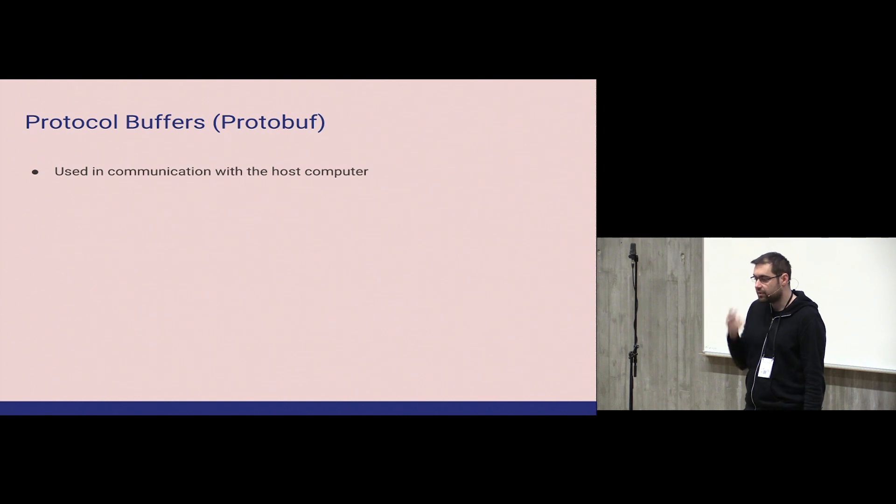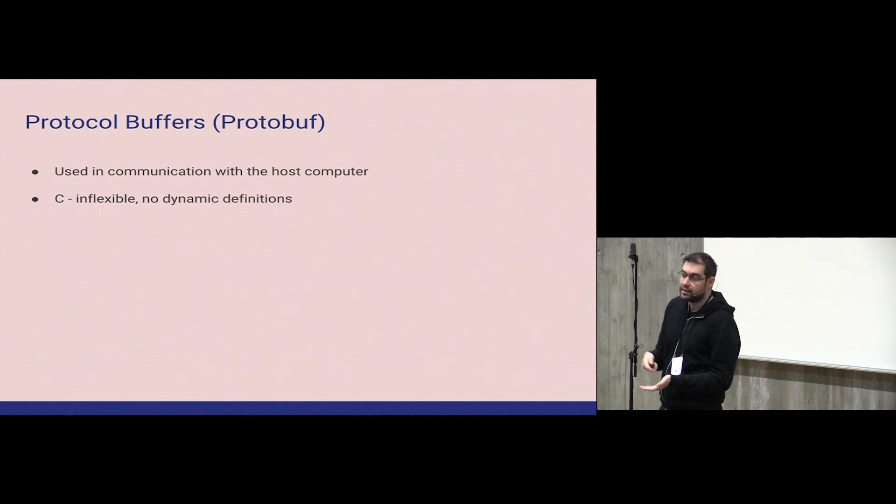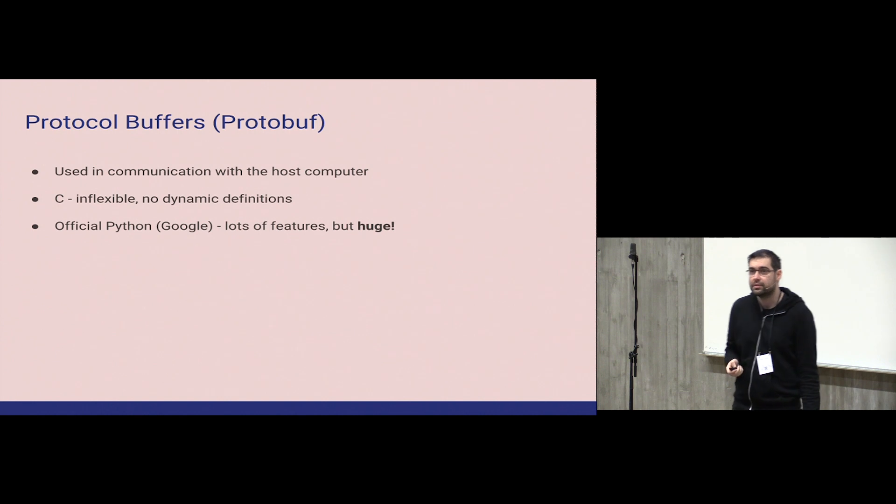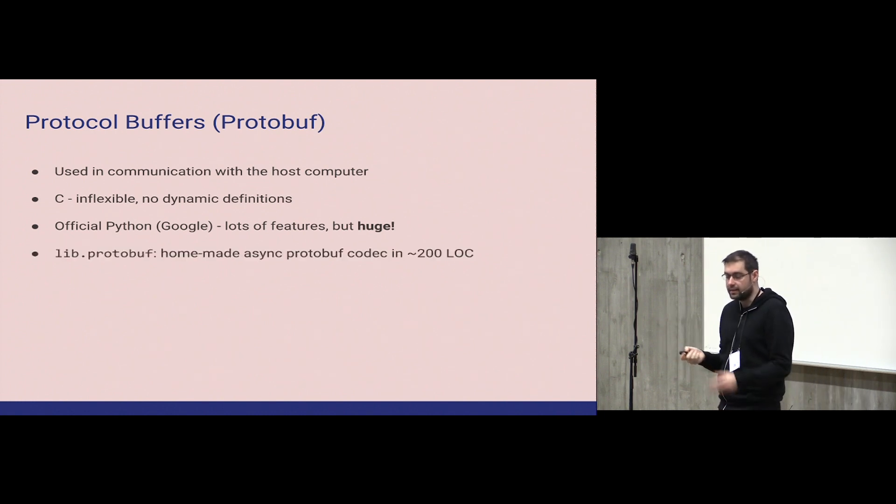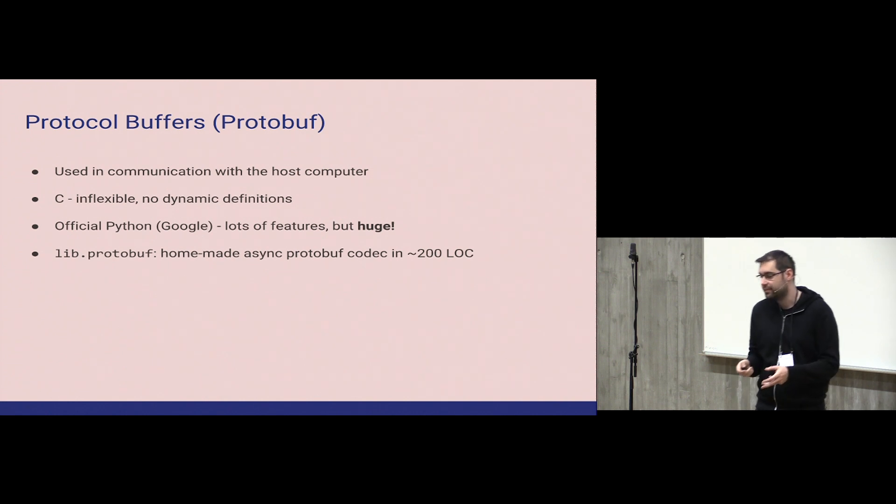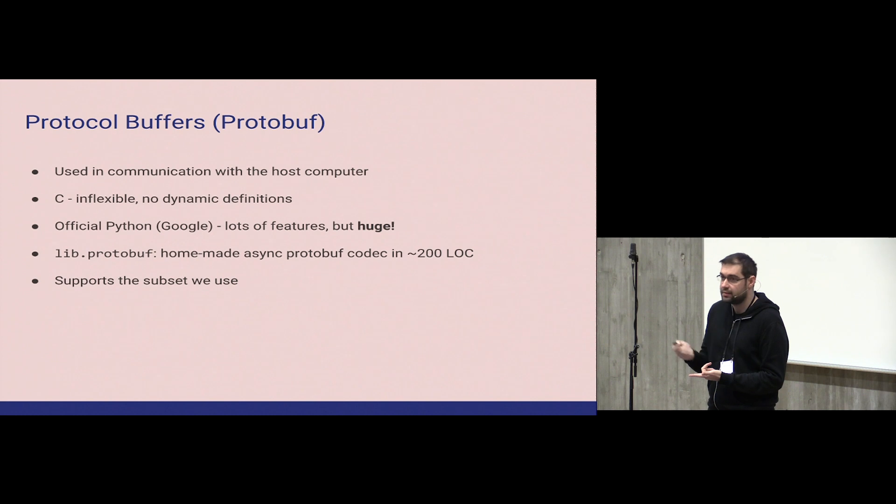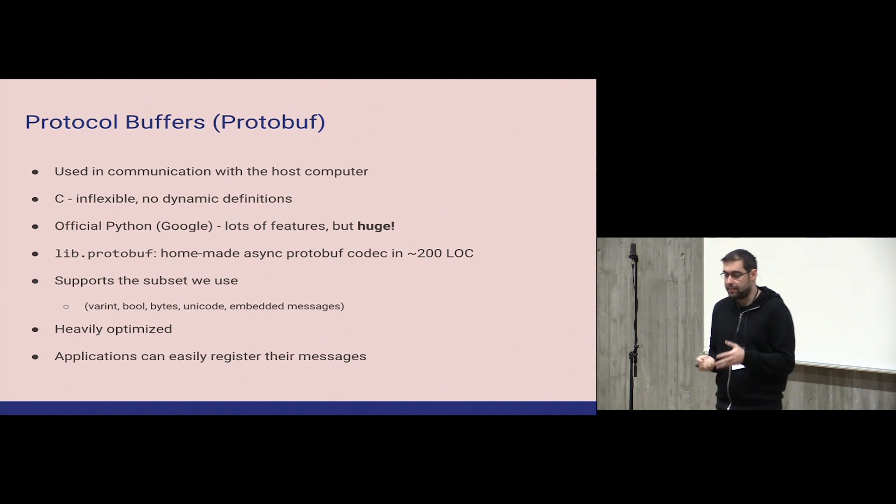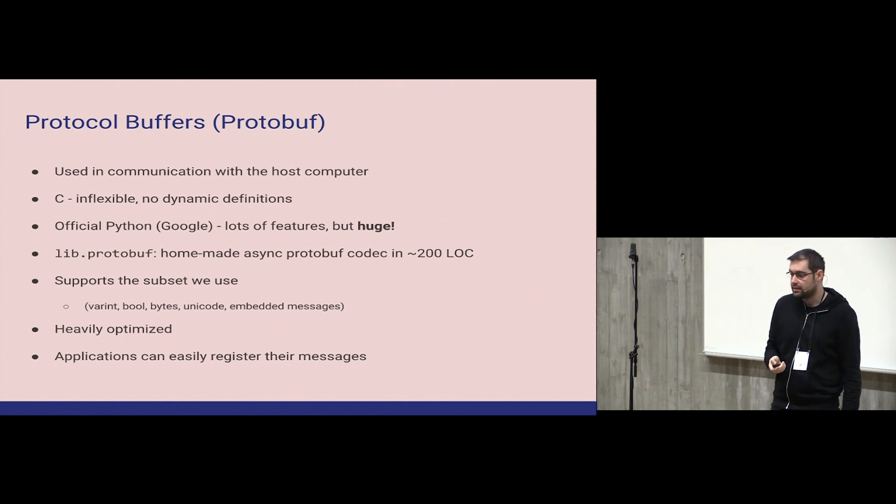Also, we are using protocol buffers for communication. And there are various options how to use it. C is very fast, but it's inflexible because it doesn't have dynamic definitions. There is an official Python port by Google. It has a lot of features, but it's really huge. So we made a kernel protocol buffer codec in something like 200 lines of code. It supports the subset we use. And it's also heavily optimized. And applications can easily register their messages. So it's dynamic. It's not static like C code.